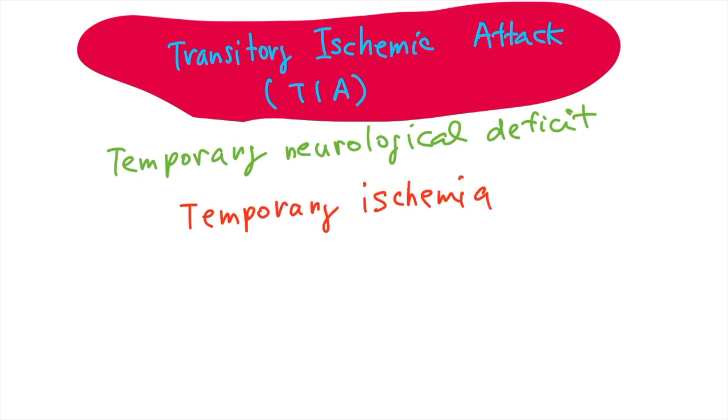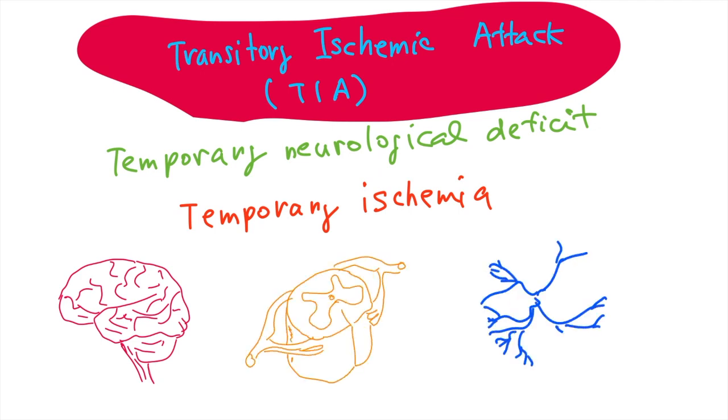So what is transitory ischemic attack? It is a temporary neurological deficit that is caused by temporary ischemia of either brain, spinal cord, or retina.